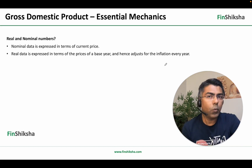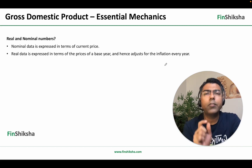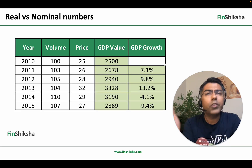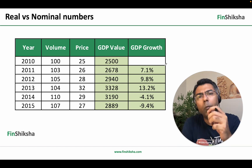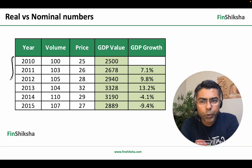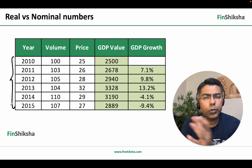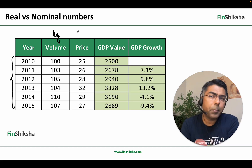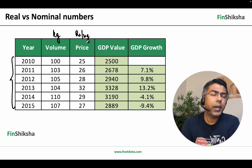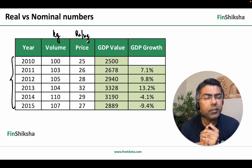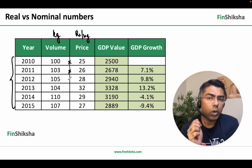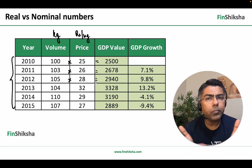But why is that needed? To understand that, let's assume a hypothetical country which produces only one good — let's assume it produces steel. We look at data of this country from the years 2010 to 2015. We have the volume available in terms of kg and the price in terms of rupees per kg. When you multiply the volume with the price — column 2 and column 3 — what you get is the output of the country. That's your GDP value.